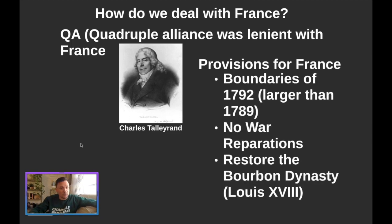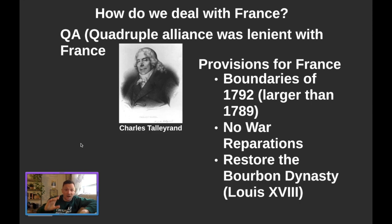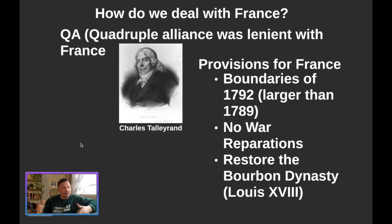Talleyrand creates the following provisions, pitching it as: look, if you want to prevent France from freaking out again — from a tyrannical guy like Napoleon actually rising to power — we should probably do the following things. He pitches the idea of boundaries: don't go back to 1789, which included what is now modern-day Belgium and some other areas. Go to 1792, which is actually a little bit larger than the 1789 borders and included some areas like what is now known as Alsace-Lorraine. He also pitches the idea of no war reparations — there is no way France can pay for all the damage caused by Napoleon. And they decided, okay, we agree on that.